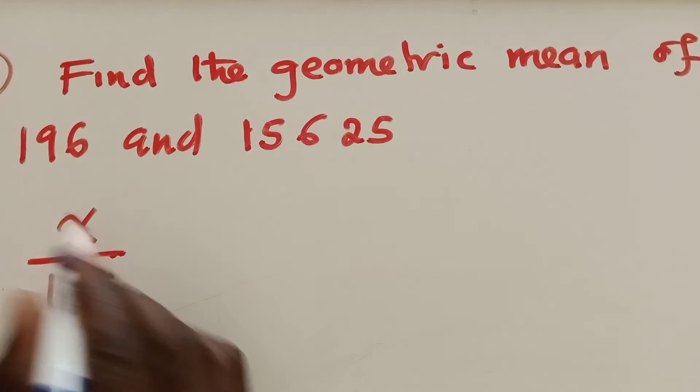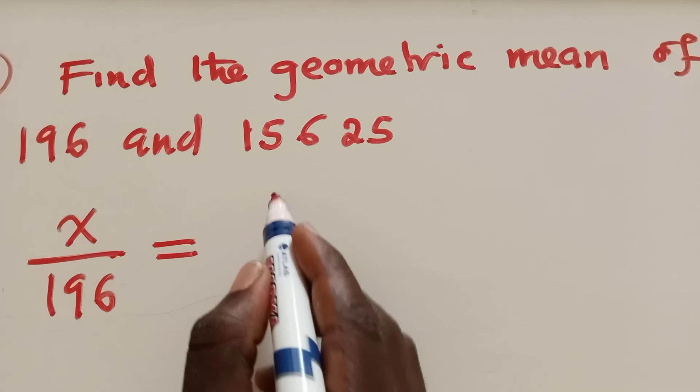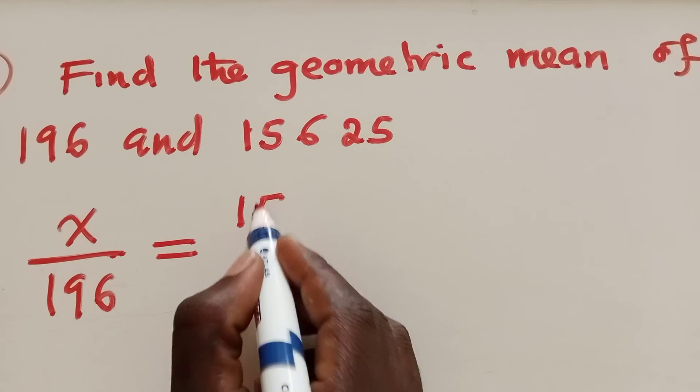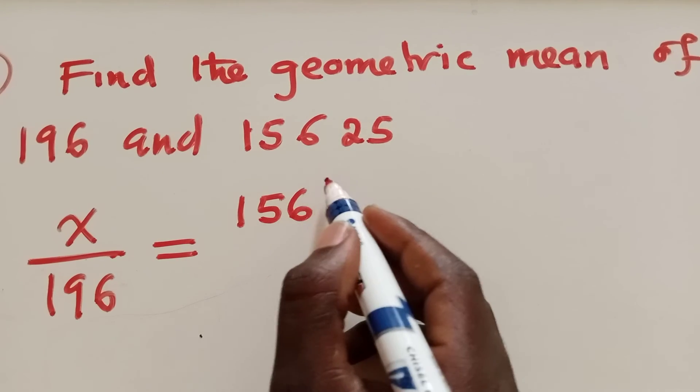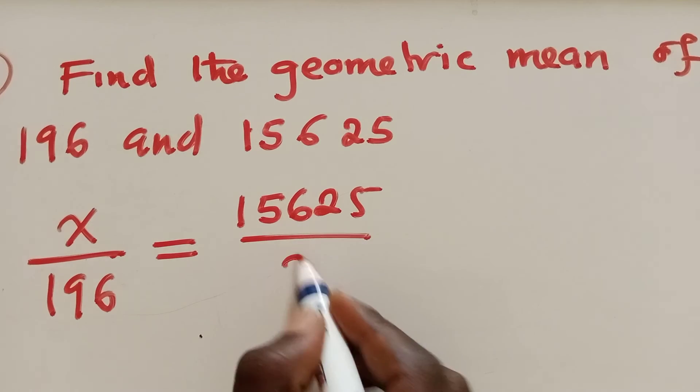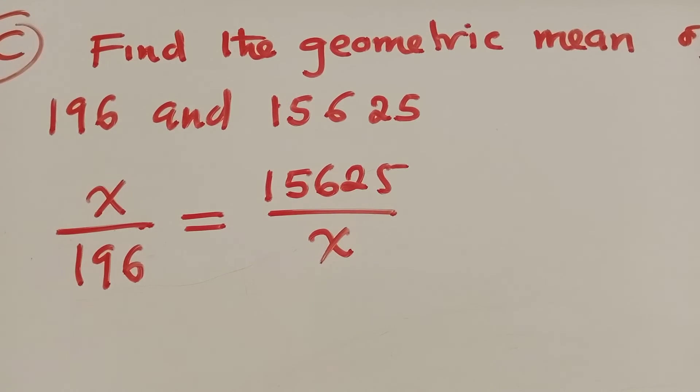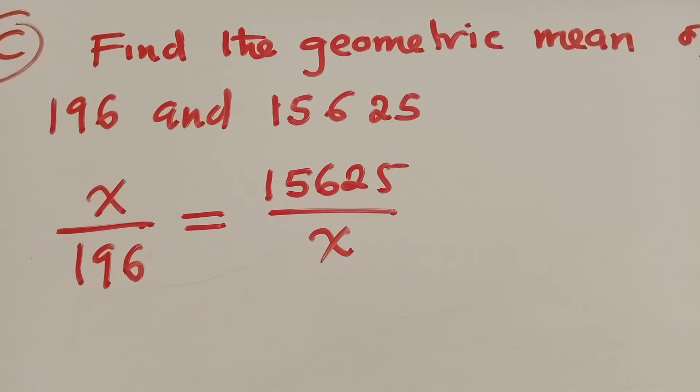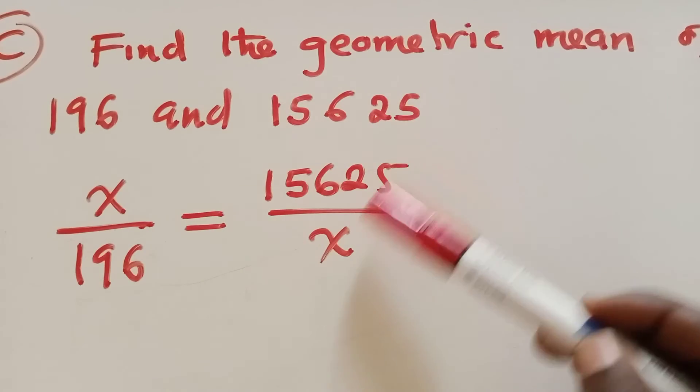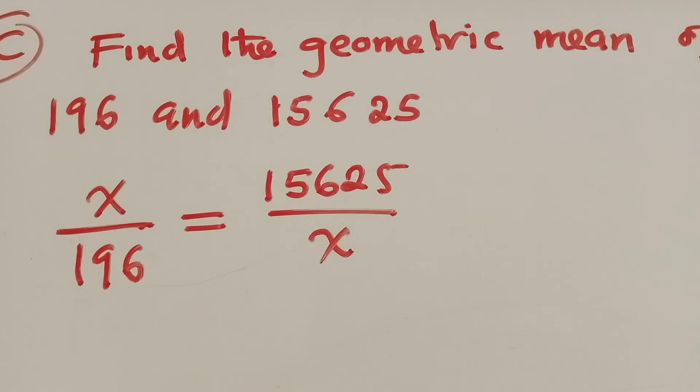The geometric mean is found by setting up the equation: x over the first term equals the second term over x. So get the term which is first, put it down here, you say x over the first term, and then is equal to the other term over x.